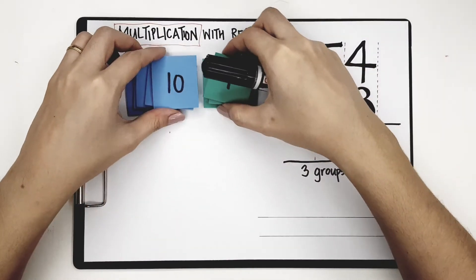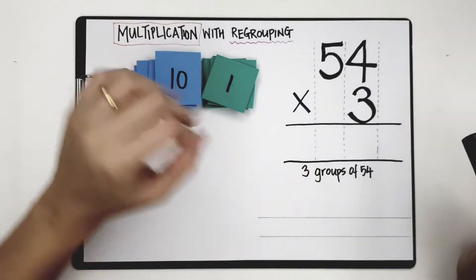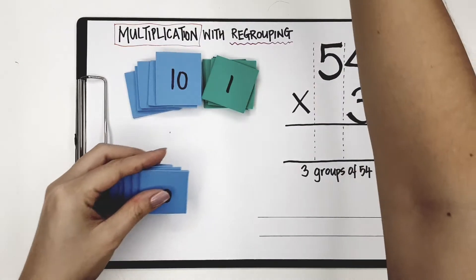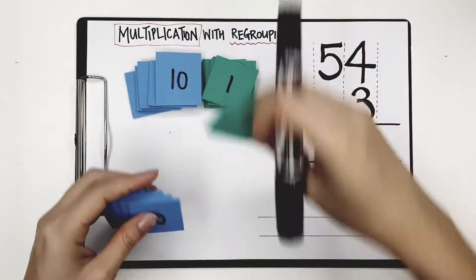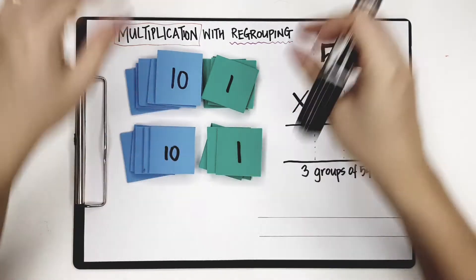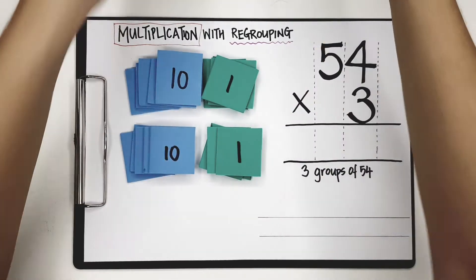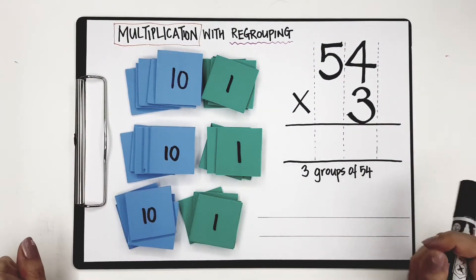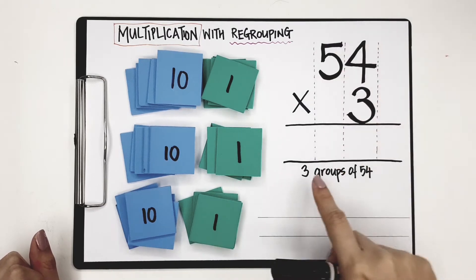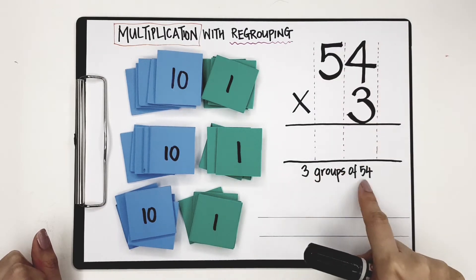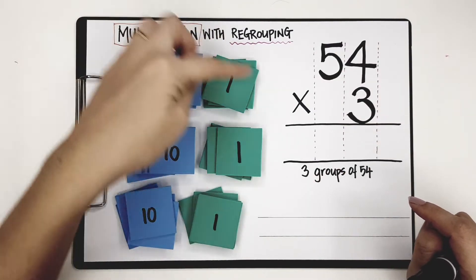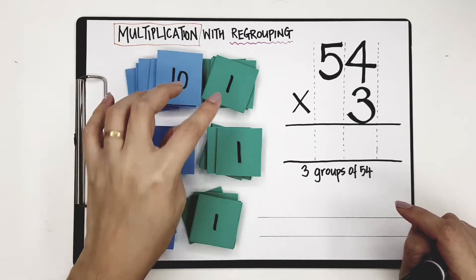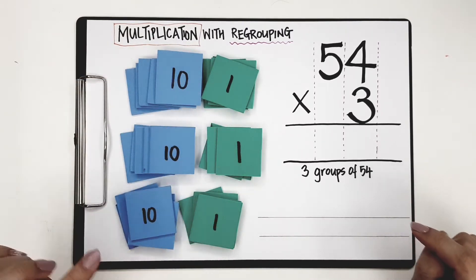Now if I want 3 groups of 54 — this is 1 group of 54 — 3 groups of 54 would look like this: 54 is the 1st group, 54 is another group, and 54 is the 3rd group. In multiplication, we are saying 3 groups of 54 — how many are there in all?